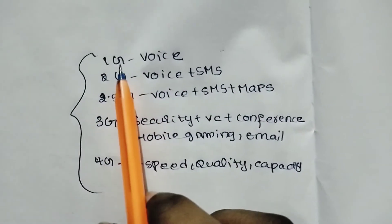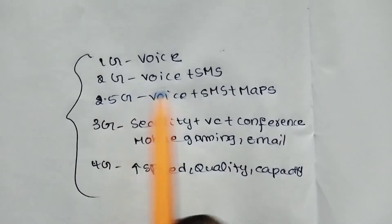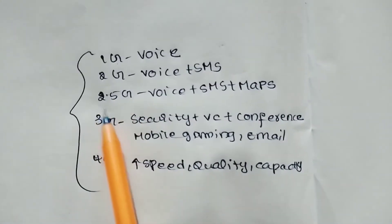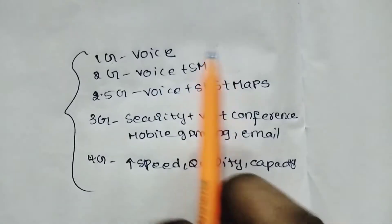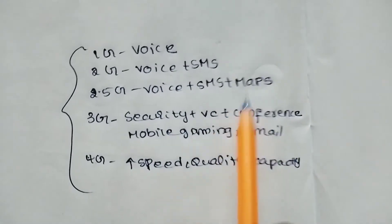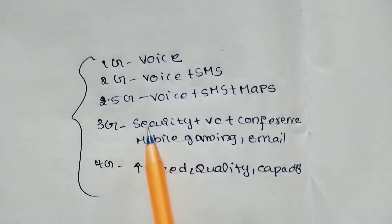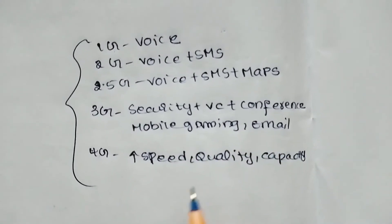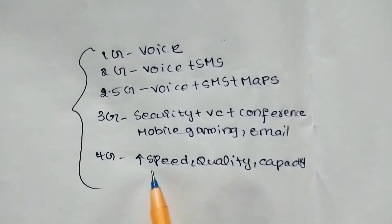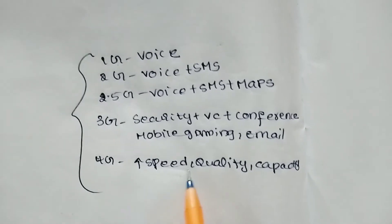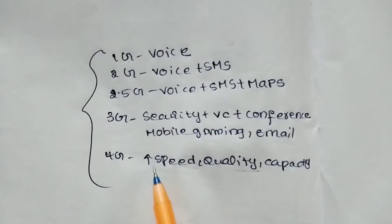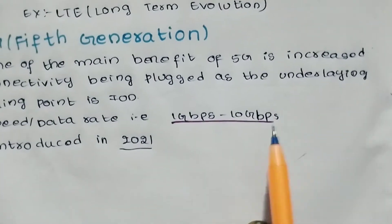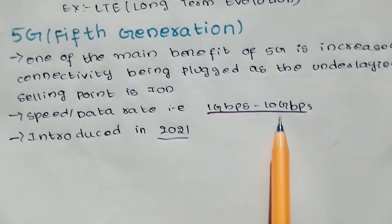To summarize: in 1G there are only voices. In 2G we use voice and SMS. In 2.5G we add maps. In 3G we introduced security, video calls, conference, mobile gaming, and email. In 4G we increased speed, quality, and capacity. In 5G we are already in development and present.